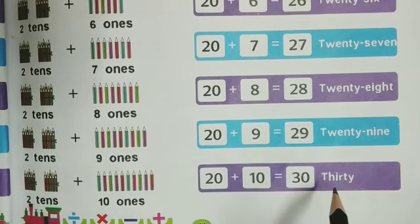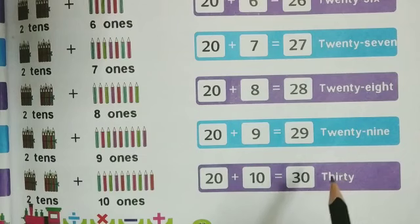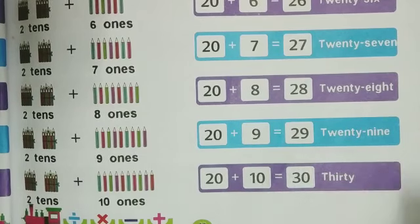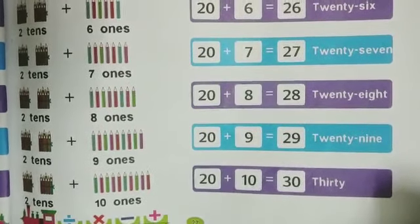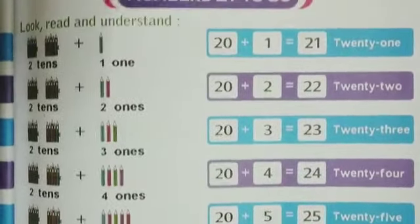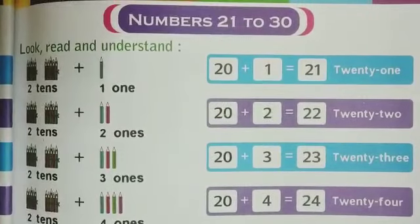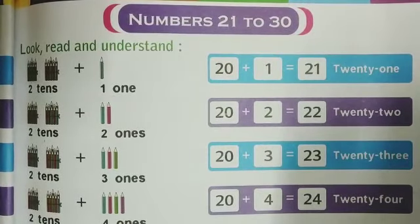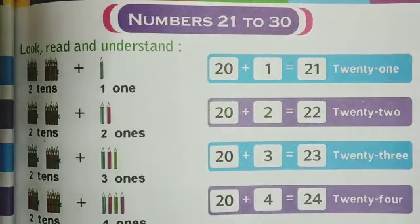The spelling of 30 is T-H-I-R-T-Y: thirty. I hope kids, numbers names from 21 to 30 are clear to you. We will soon meet with a new topic. Do practice it at your home. Stay safe. Stay healthy.